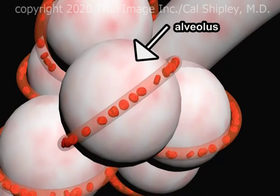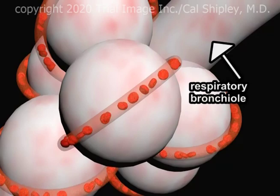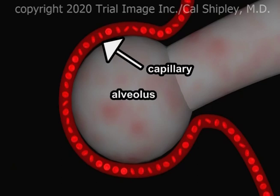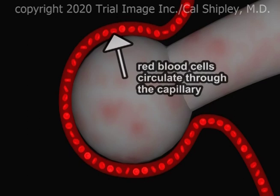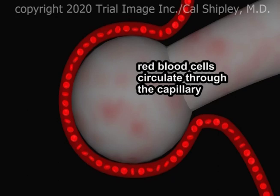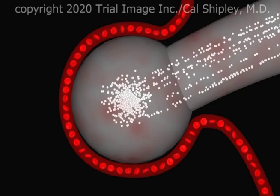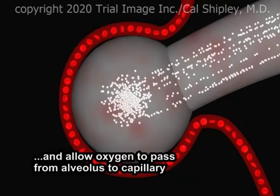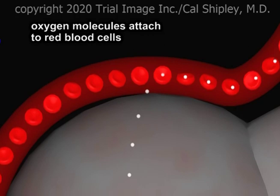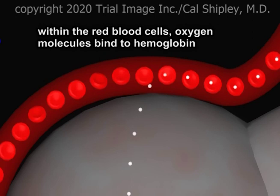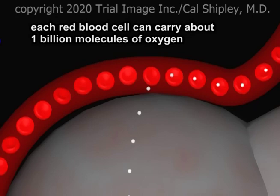The capillary is in close contact with a single alveolus. A respiratory bronchiole is attached to the alveolar sac. The diameter of a capillary is just greater than that of a red blood cell, which keeps the red blood cells in close proximity to the wall of the alveolus. Air enters the alveolus from the respiratory bronchiole. The walls of both the alveolus and the capillary are permeable to oxygen molecules and allow the movement of oxygen from one to the other. Oxygen molecules attach to red blood cells, binding to an iron-containing protein known as hemoglobin. Each red blood cell is typically capable of carrying about one billion molecules of oxygen.